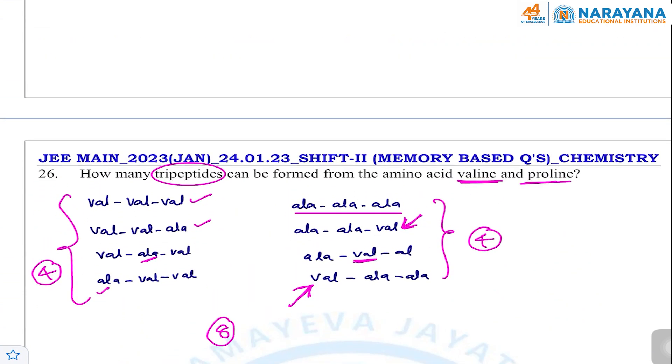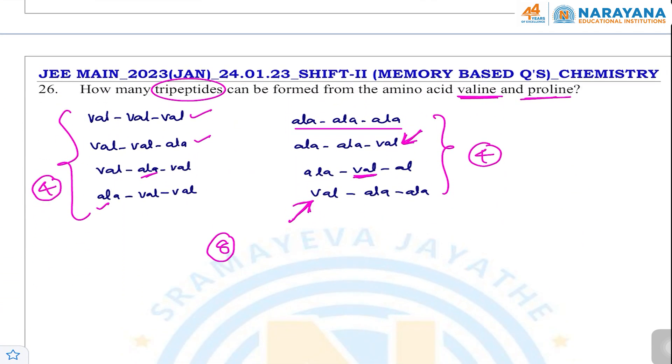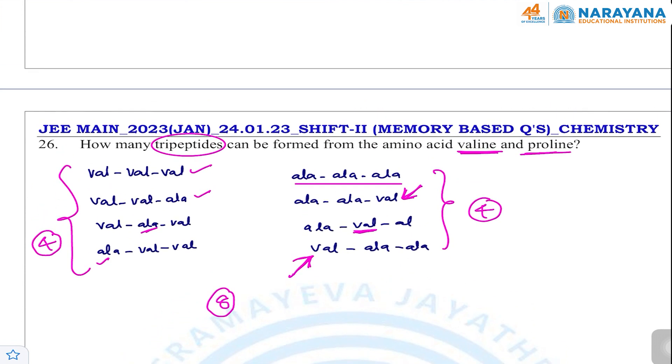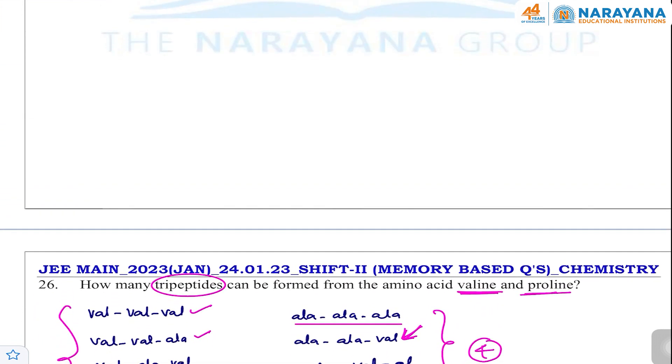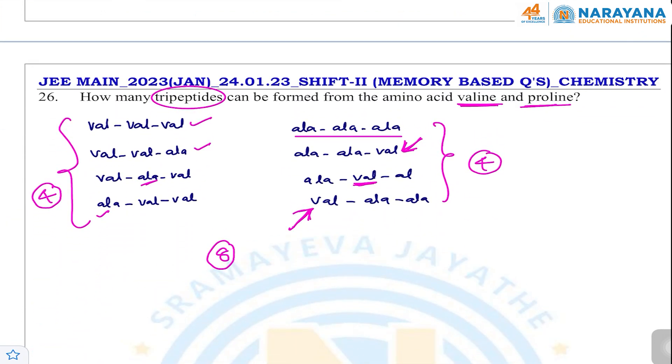So this is the paper — we covered 26 questions. You can go through these questions and have some idea for the upcoming exam.